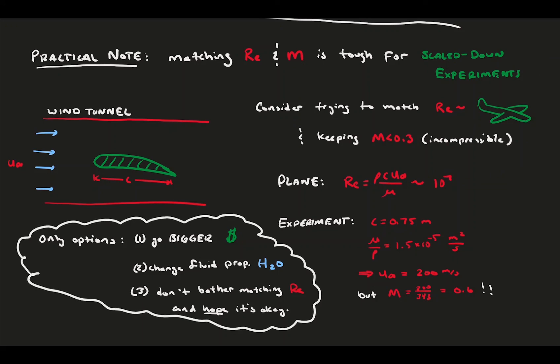Or, we can do what is normally done, which is to get as high of a Reynolds number as we can and try to assess how being at a different Reynolds number may impact our results. So, now you get a sense for how, in application, these similarity variables are wrestled with.